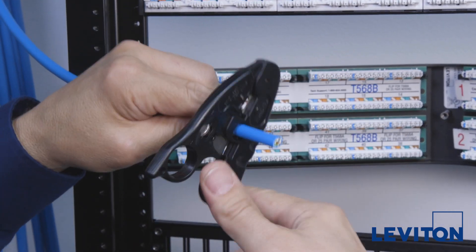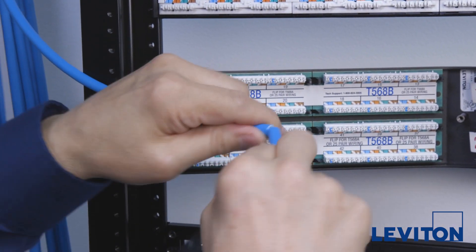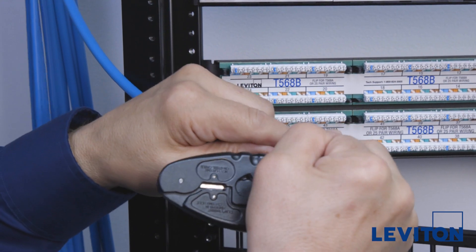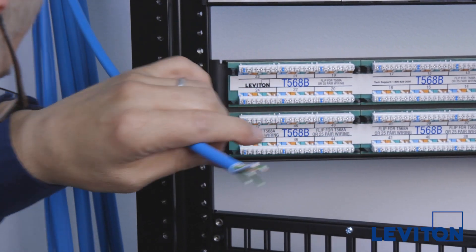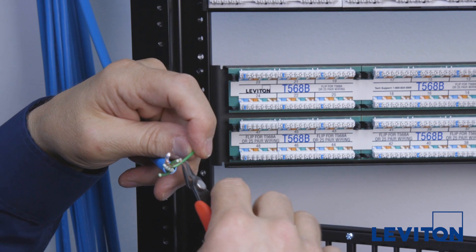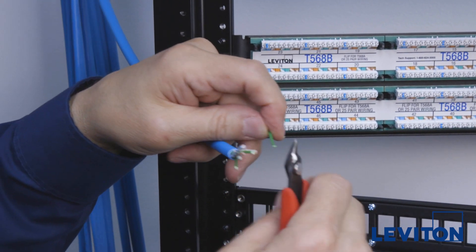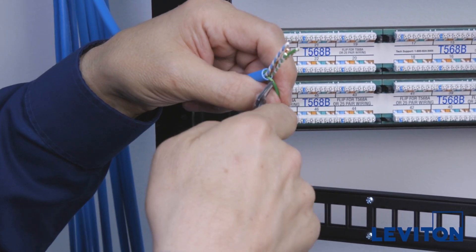Next, strip the end about an inch using a data cable stripper by going around once. This should break the jacket and expose the conductors. With a set of flush cutters, prep the cable by cutting out any non-pair elements.